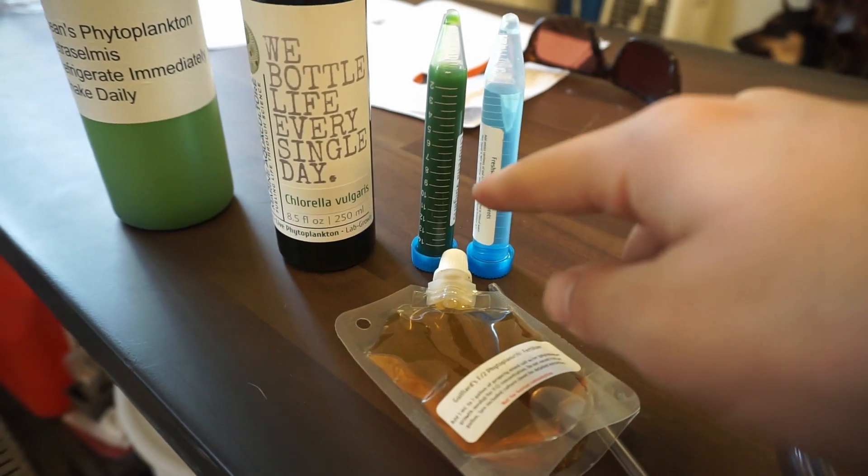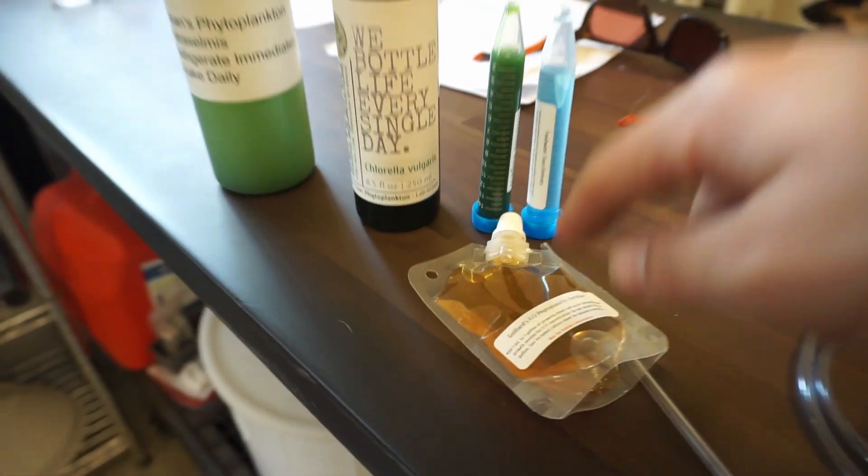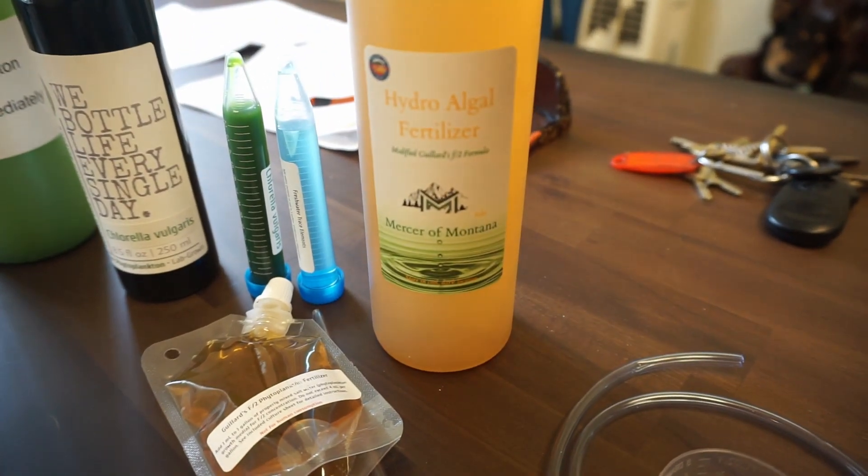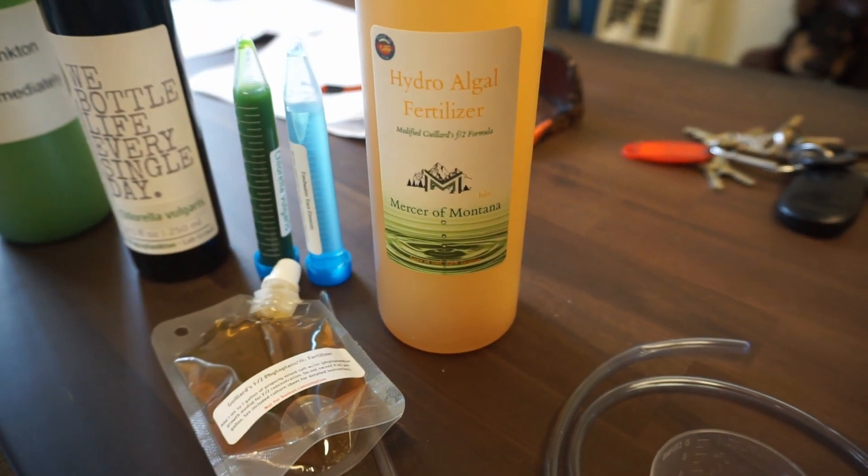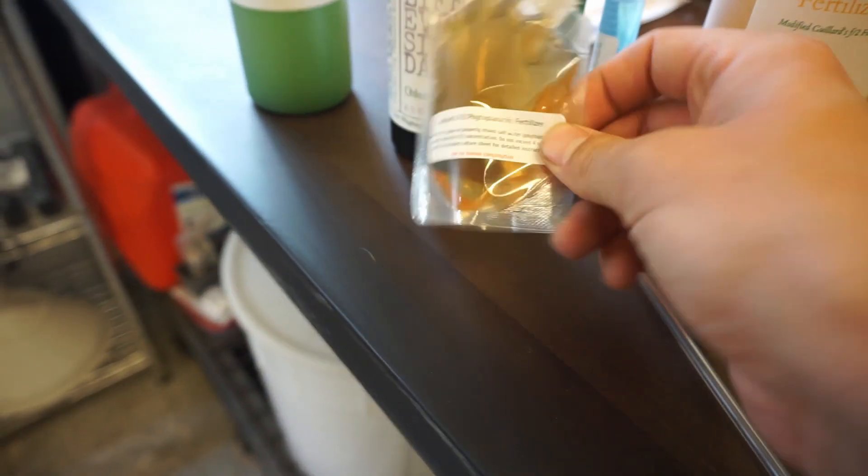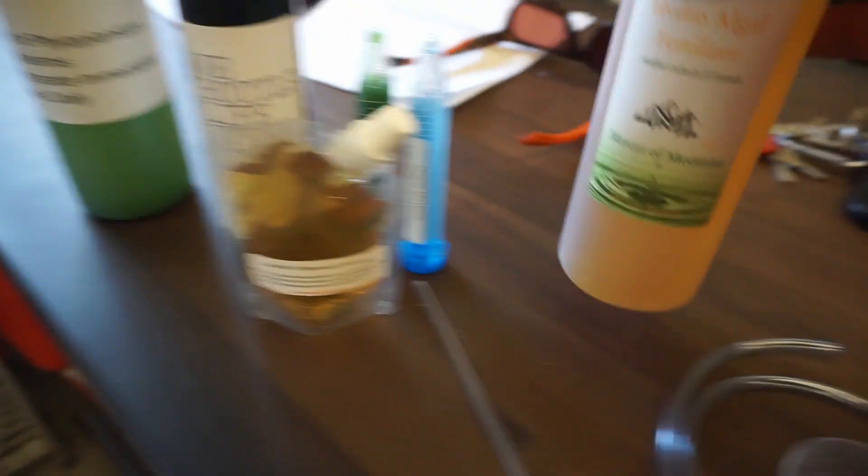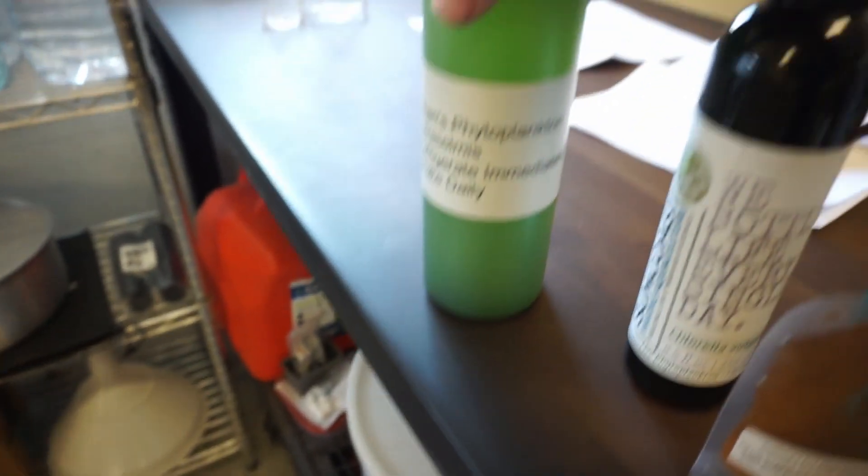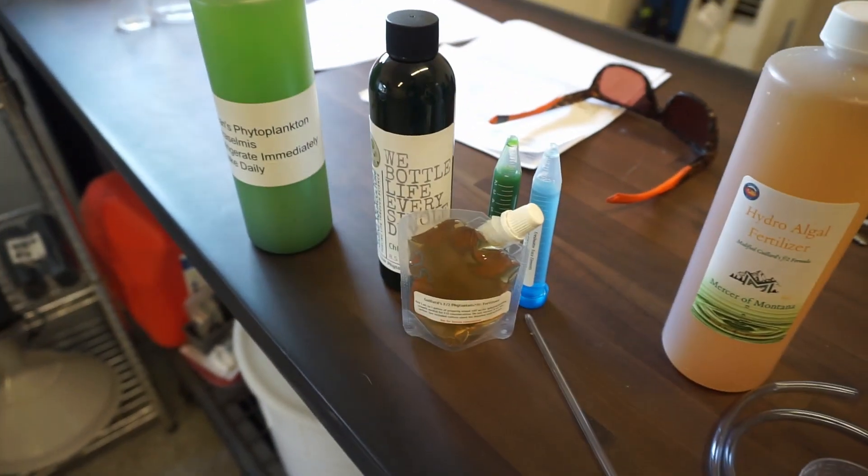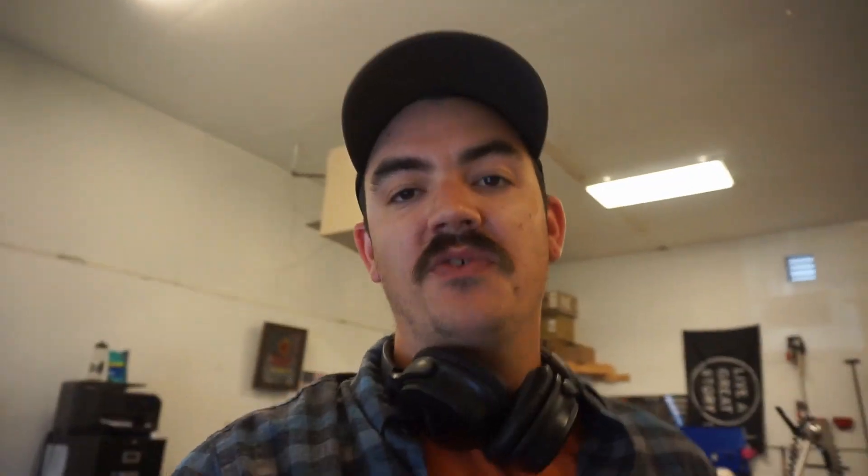And then the other thing that I got was this fertilizer right here from Mercer of Montana. And that's the same thing that's in this little pouch, but this all came together as a kit - this I got separate and this I got separate. So on the next video guys, we're gonna be starting all this stuff right here in the glass jars. Thanks for following along on the update guys - just a super quick video just to show you that things are moving along over here.